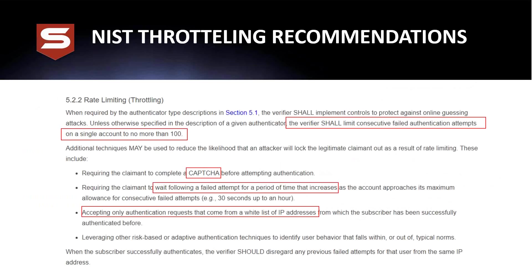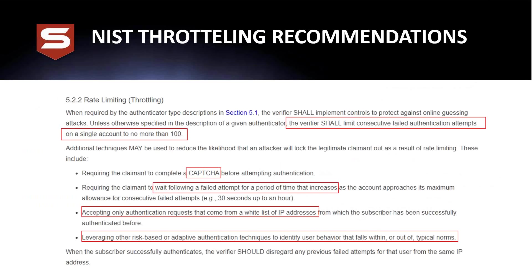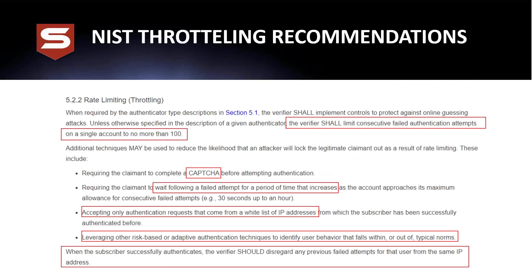NIST also recommends whitelisting who is allowed to authenticate — put it behind a VPN, behind a 2FA solution, reverse-proxied. They also recommend using user behavior analytics to detect something fishy, and when someone successfully authenticates, discard any previous failure tally.